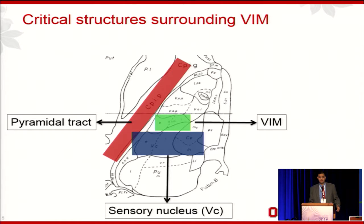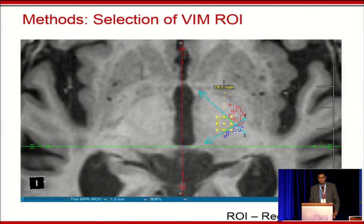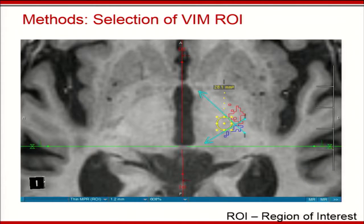To recap the anatomy in this region: the green box is the ventral intermediate nucleus, right lateral to that is the pyramidal tract, and posterior to that is the sensory thalamus. We recreated that anatomy by tracking the pyramidal tract and lemniscus, and then based on a safe distance of about 3 millimeters from their borders, identified the ventral intermediate nucleus region of interest.